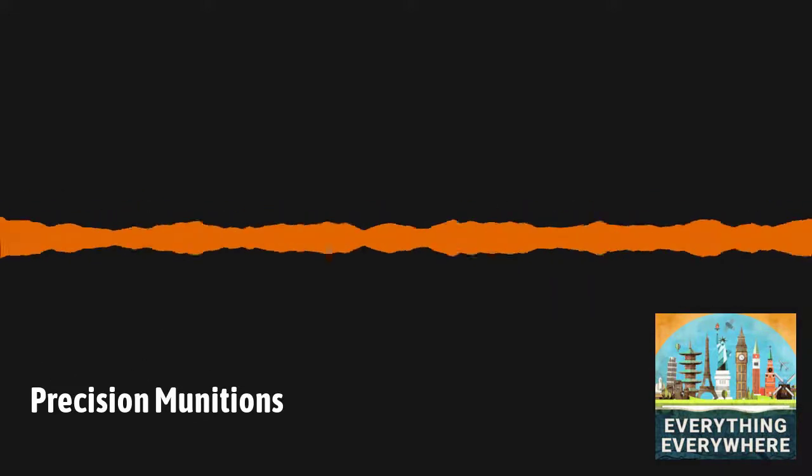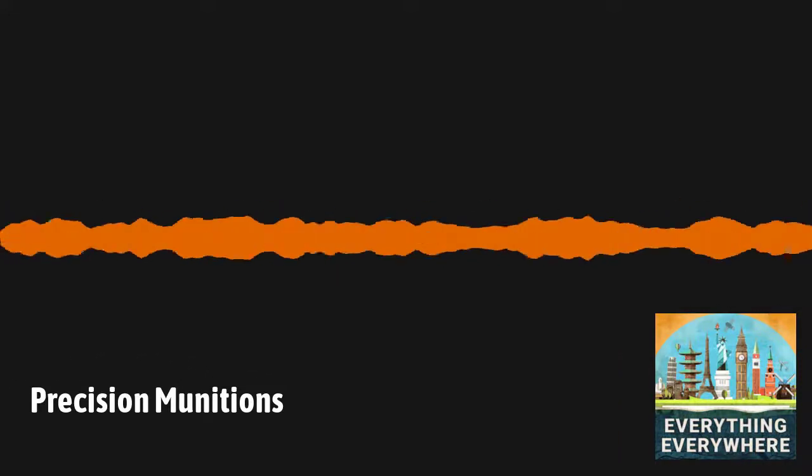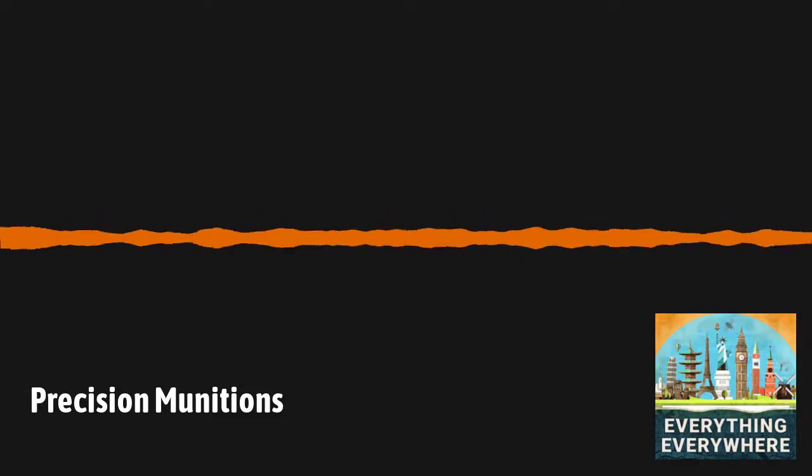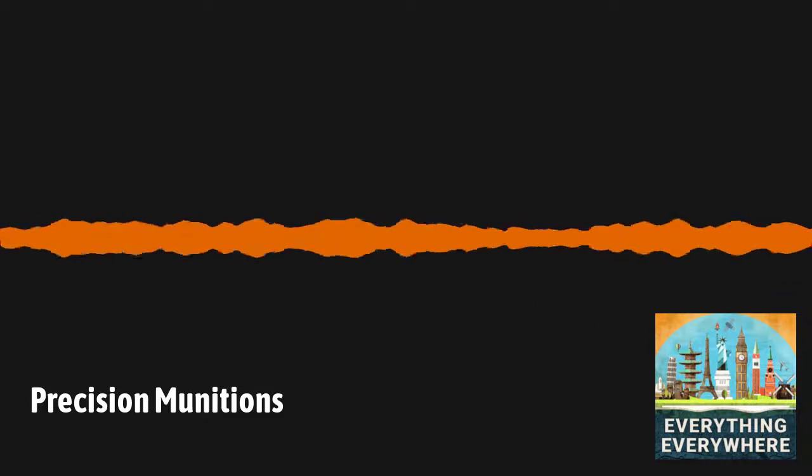The idea behind strategic bombing was to attack economic or infrastructure targets to take away an enemy's ability to wage war. Let's say the enemy had a factory that made tanks. If you could bomb that factory and take it out of commission, then the enemy's ability to make new tanks would be inhibited.